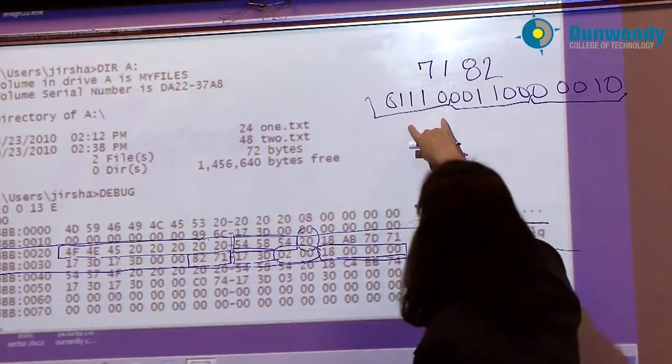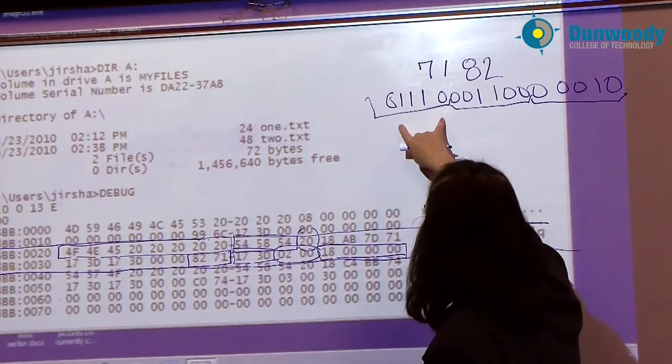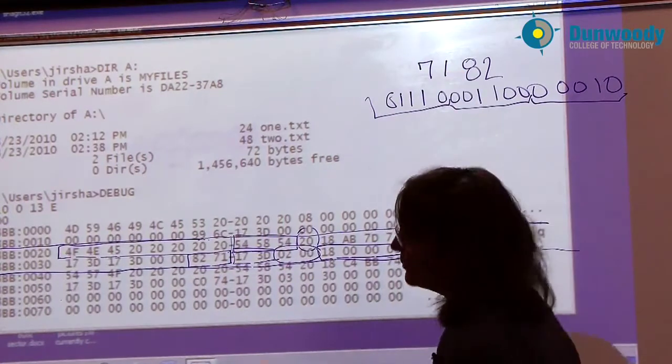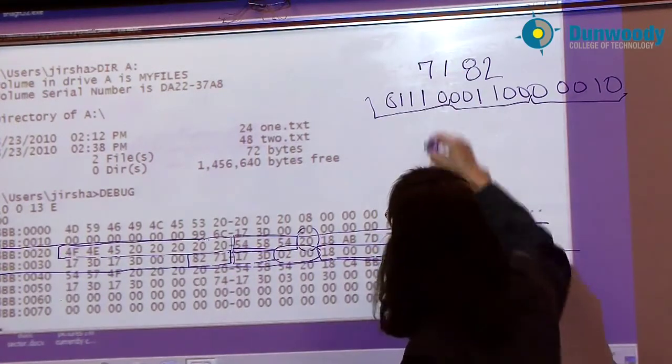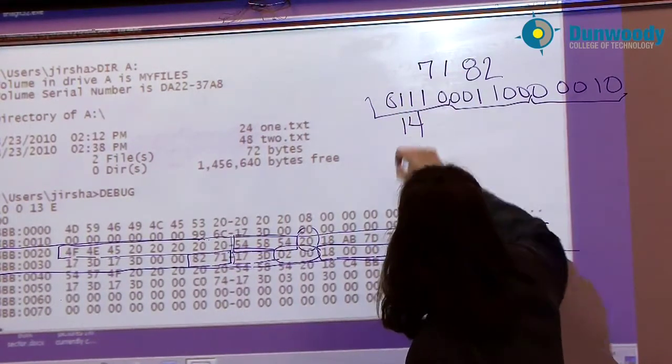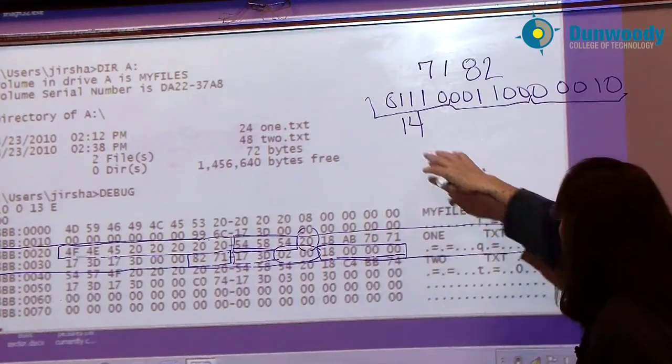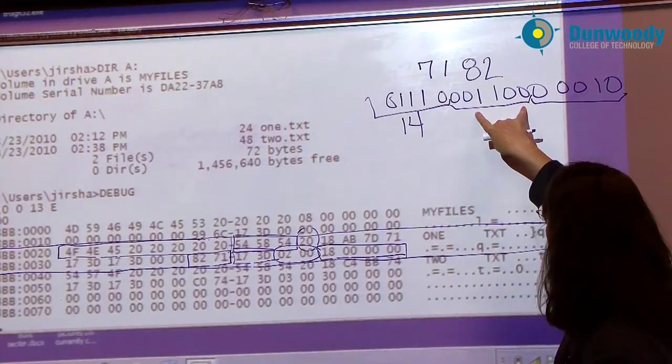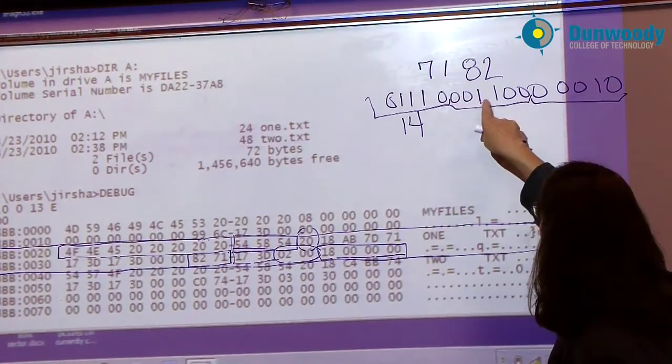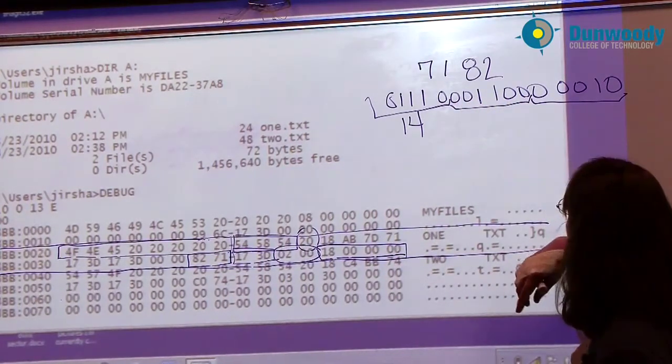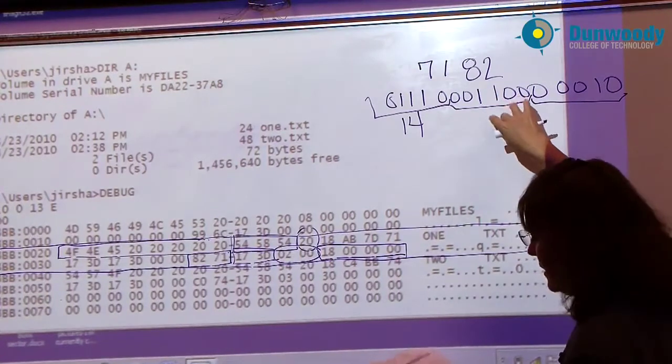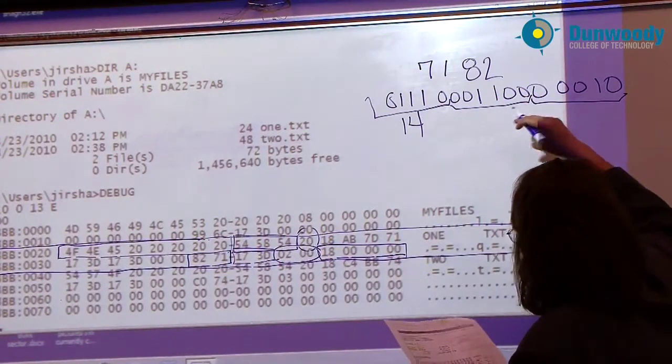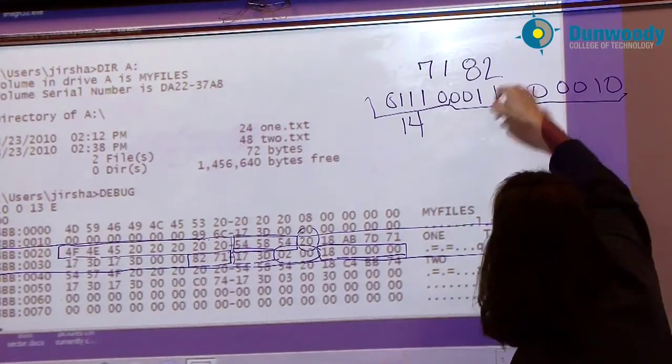On what hour was this file modified or created? Doesn't really matter. Binary 0, 1, 1, 1, 0 converts in decimal to 14. 14th hour, how many minutes into the 14th hour was this file created or modified? 0, 0, 1, 1, 0, 0 in binary is in decimal - it was 12. Yep, that's 12.